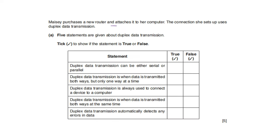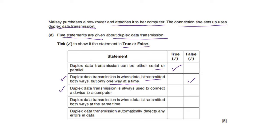Macy purchases a new router and attaches it to her computer using duplex data transmission. Five statements — tick true or false. Duplex data transmission can be either serial or parallel — true. Duplex data transmission is when data is transmitted both ways but only one way at a time — false, that is half duplex. Duplex data transmission is always used to connect a device to a computer — false. Duplex data transmission is when data is transmitted both ways at the same time — true. Duplex data transmission automatically detects any errors in the data — false; error detection methods must be implemented separately.